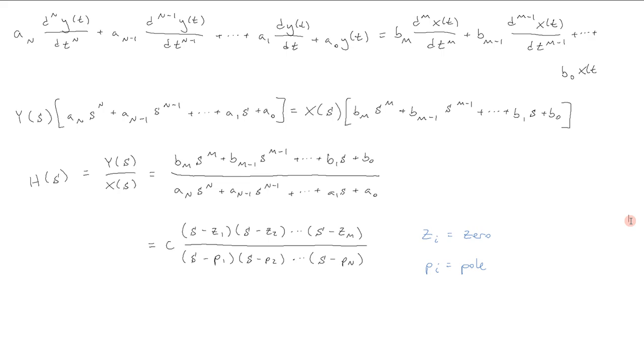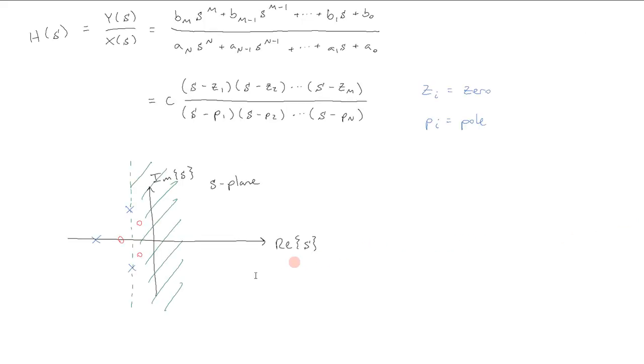And we get the following form. Now, again, this can be plotted in the s-plane, in the Laplace space, by just plotting the poles and the zeros, which fully characterize the system. This may look something like is depicted over here, with x's representing poles and o's representing zeros.